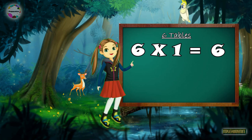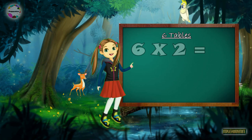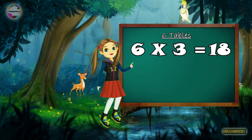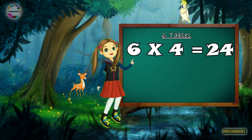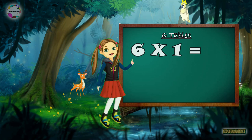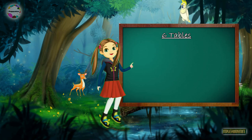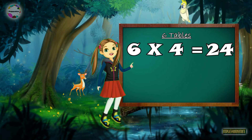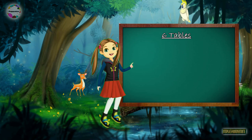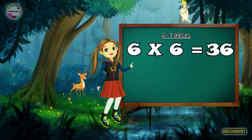6-1s are 6. 6-2s are 12. 6-3s are 18. 6-4s are 24. 6-5s are 30. 6-6s are 36.